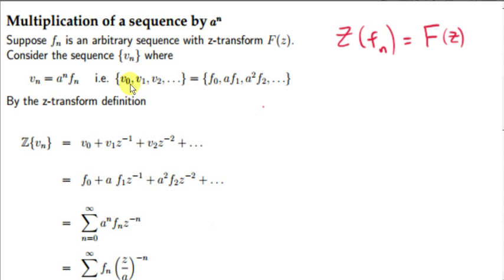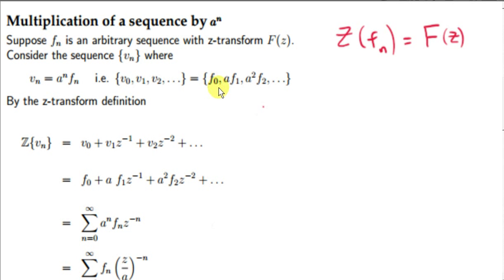Let's look at the terms of v sub n. Since n begins at 0, the first term is v sub 0, then v sub 1, v sub 2, and so on. Plugging in successive values of n starting with 0, we get a to the 0 times f sub 0, which is just f sub 0; then a to the 1 times f sub 1; then a to the 2 times f sub 2, and so on.